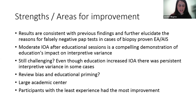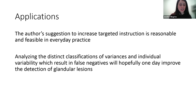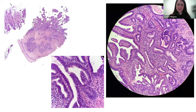Results are consistent with previous findings and further elucidate reasons for falsely negative pap tests in biopsy-proven EA and AIS. Moderate agreement after educational sessions is a compelling demonstration of education's impact on interpretive variance. However, even with significant improvement, in nine cases upgraded to high-risk status, five were still classified as nil or low-risk following re-screen — a persistence of interpretive variance. The authors acknowledge review bias and educational priming may have been present; they controlled for this using blinded design and control cases. The study was conducted at a large academic center with educational resources and expertise. Participants with the least experience had the most improvement. Targeted instruction is reasonable and feasible in everyday practice. A personal recent case is shown: the pap was completely negative — sampling variance — while biopsy revealed invasive adenocarcinoma.